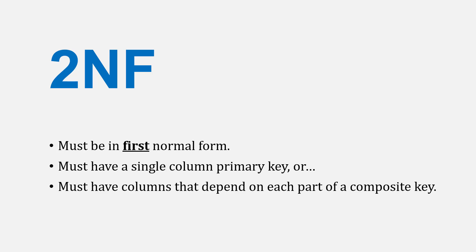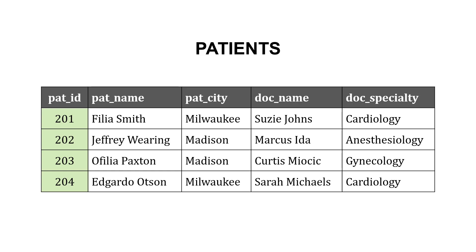To get to second normal form, we must first have achieved first normal form. Then either we must have a single column primary key, or we must have columns that depend on each part of a composite key — a composite key being a key that's more than one field. In the patients table we looked at, we have a single column primary key, so we've met second normal form. But if we had a composite key made of multiple columns, like patient name and city together, any other pieces of data have to depend on both parts of the primary key — not just one.